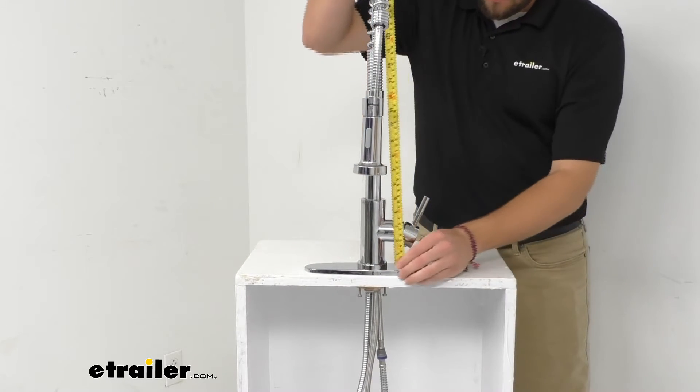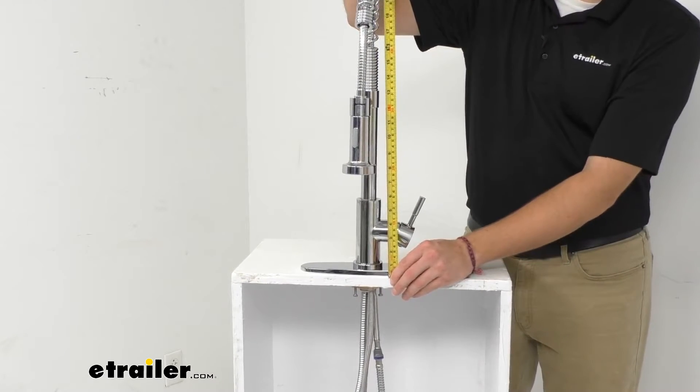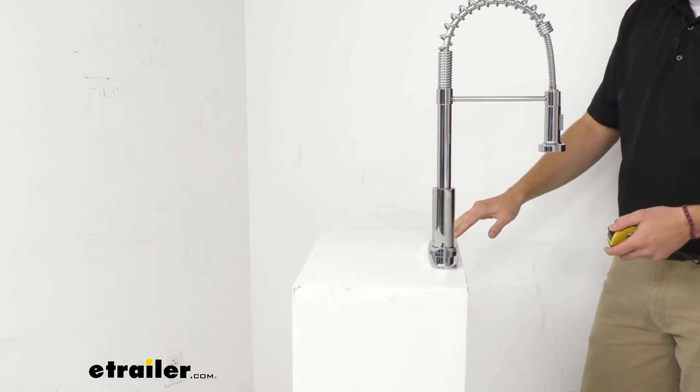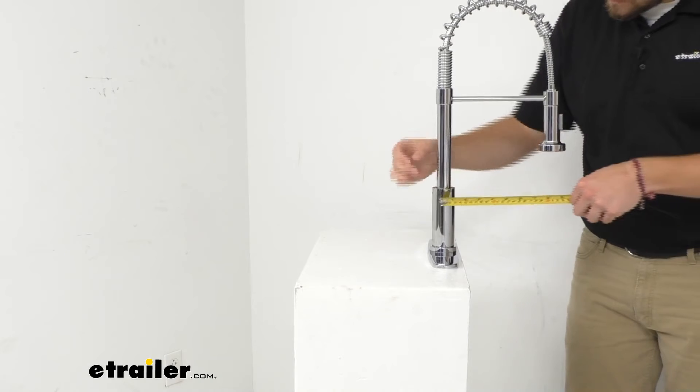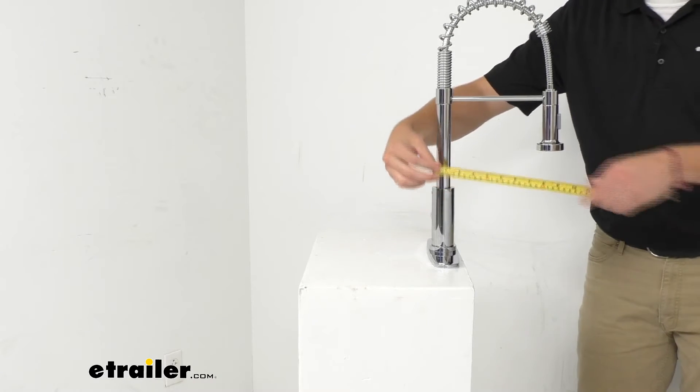Now, our overall height of our spout, right there in the middle, is going to be putting us at 20 inches. Now, our spout length from center will find itself right at 9 and 1/2 inches.